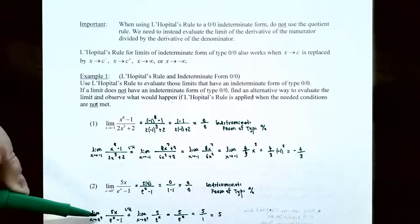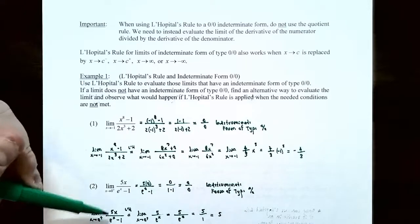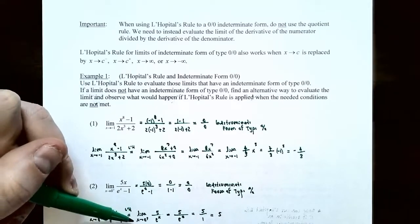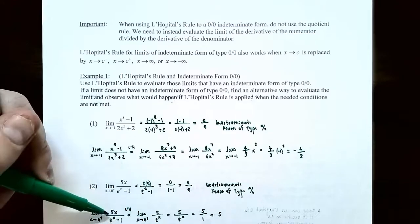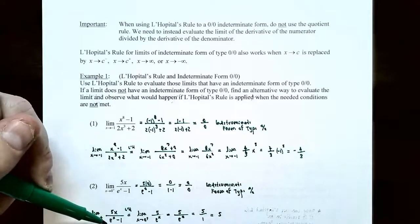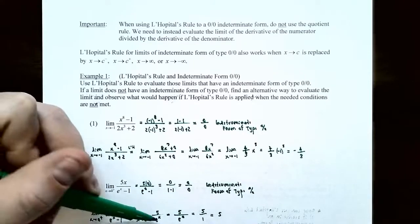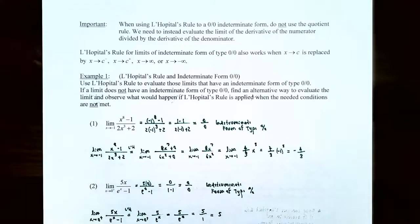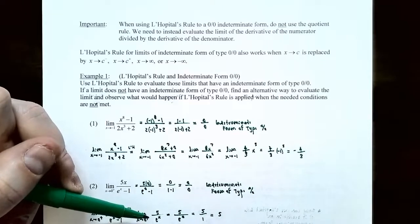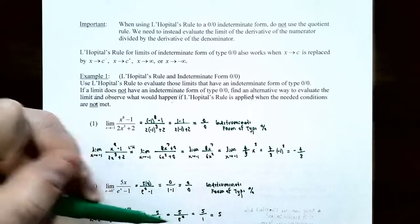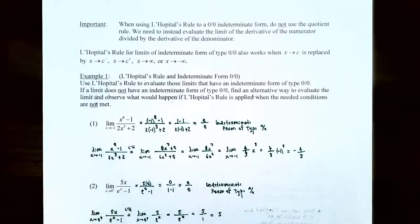Applying L'Hôpital's rule to the limit as x approaches 0 from the right of 5x/(e^x - 1): the derivative of the numerator is 5, and the derivative of the denominator is e^x. So we have the limit as x approaches 0 from the right of 5/e^x. The numerator is always 5, so no indeterminate form arises. Substituting x = 0: 5/e^0 = 5/1 = 5. This limit equals 5.